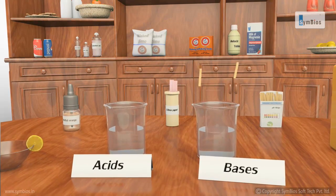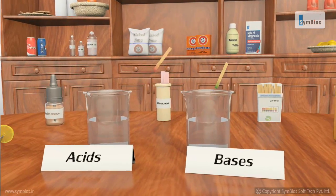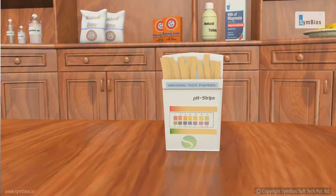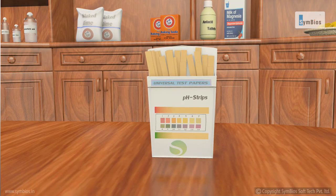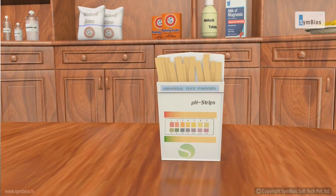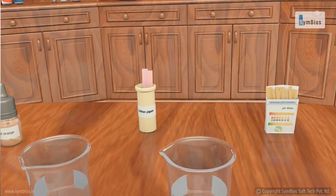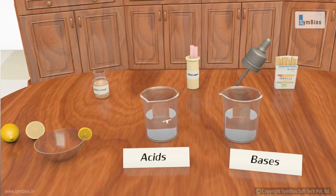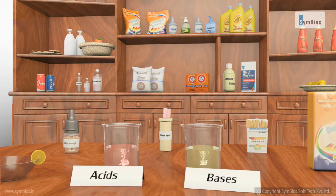The pH strip gives the count of hydrogen ions when dipped in an aqueous solution. A pH count less than 7 indicates an acidic solution, whereas a pH count greater than 7 indicates a basic solution. Solutions having a pH equal to 7 are neutral — they are neither acidic nor basic. A chemical like methyl orange turns an acidic solution red and a basic solution yellow.